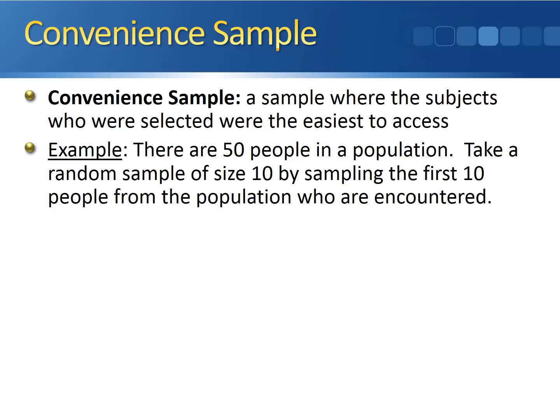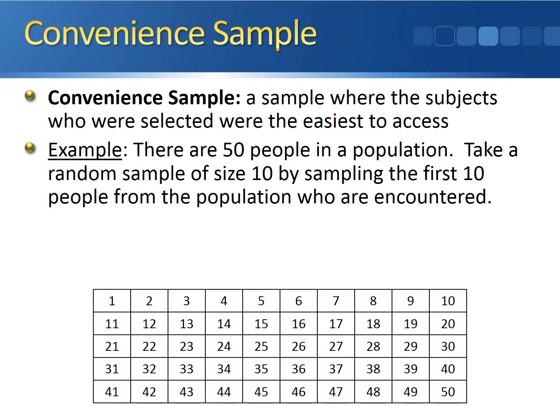We can do a very similar thing as we did before. We give everyone a number from 1 through 50. We tell them to line up and the first 10 people who walk through the turnstile are the ones who we decide to sample. They're the 10 easiest ones to access because we're encountering them first. People 11 through 50, we just tell them to go home. We don't need them.